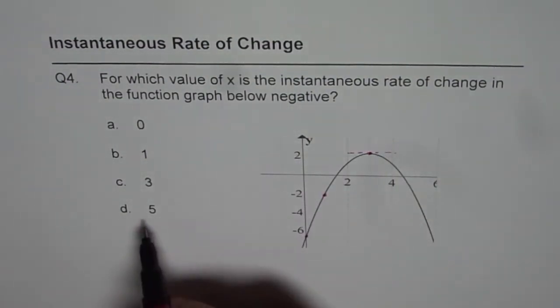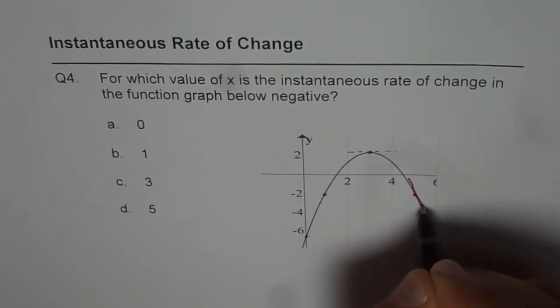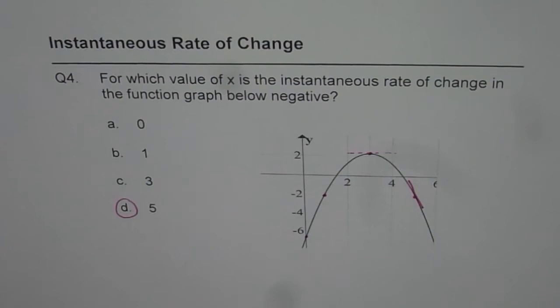Not negative and at 5 it is definitely negative, right? So it is kind of this point and here the tangent line is negative and therefore D is our answer. D is the right choice.